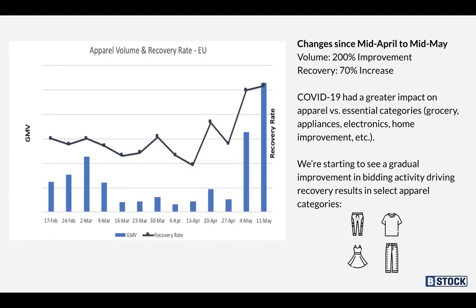We're seeing an increase in volume of 200% improvement, which is fantastic news for the marketplace, and a recovery increase of 70%, which means buyers are really keen to get their hands on this stock. We've also noticed we're starting to balance out apparel versus essential categories. Previously, through March and April, essential categories were driving more sales — grocery, appliances, electronics, home improvement, home DIY, and home and living — whereas apparel was not as popular. What we're now seeing is a recovery in the secondary marketplace with real demand from buyers to get this stock before the spring summer season is over.